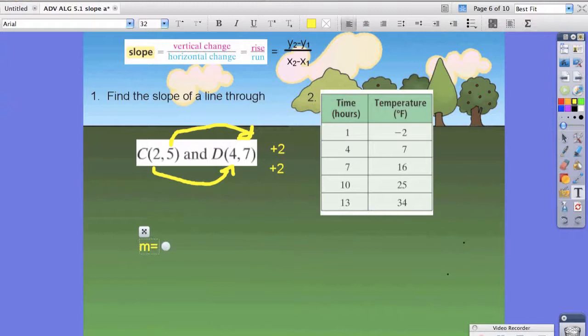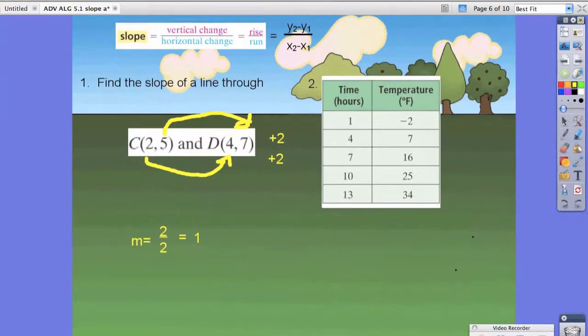Now, that tells us that our slope is 2 divided by 2, which is just 1. Pretty simple, right? Let's try another one.